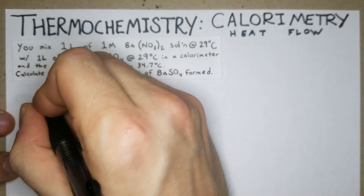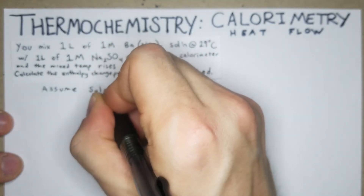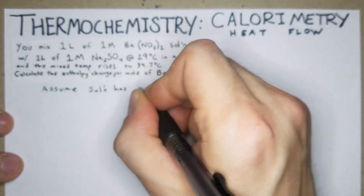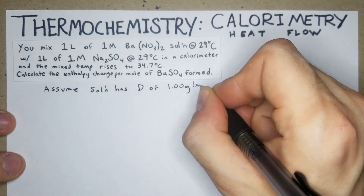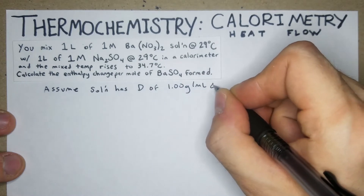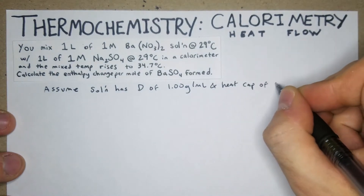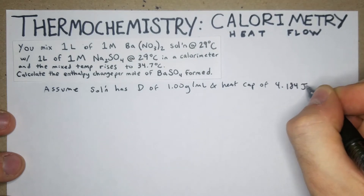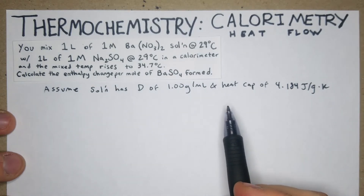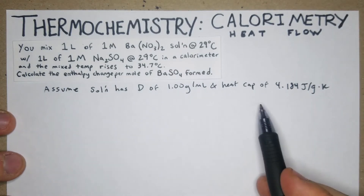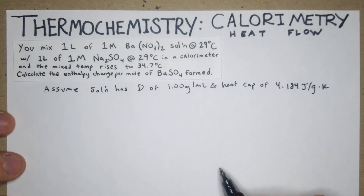We can assume the solution has a density of 1.00 g/mL and a heat capacity of 4.184 J/(g·K). This is pretty common in these problems — they'll give you the density and heat capacity of water because it's probably a close enough approximation.